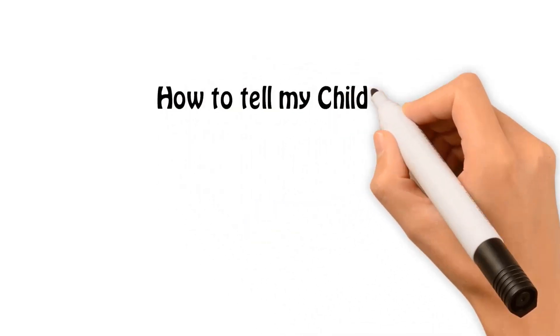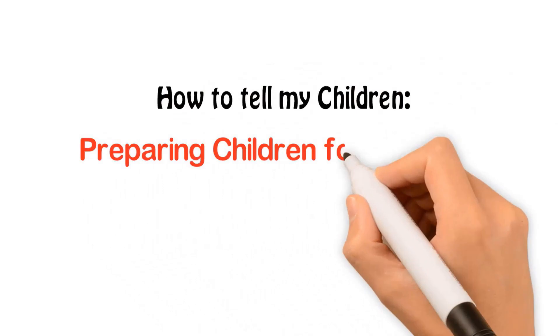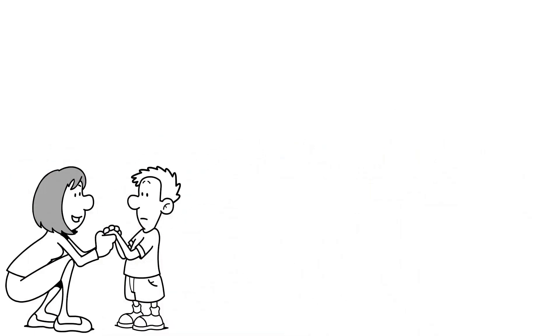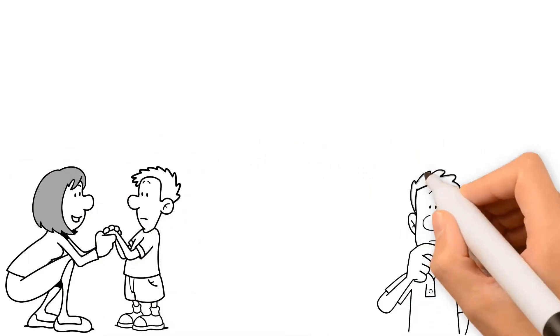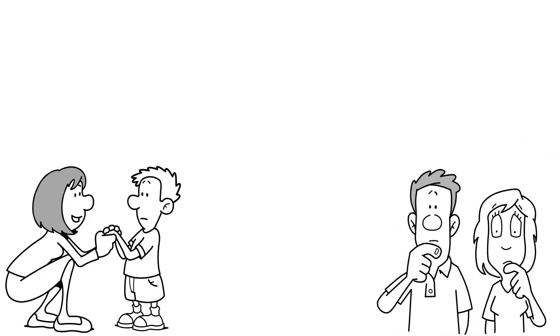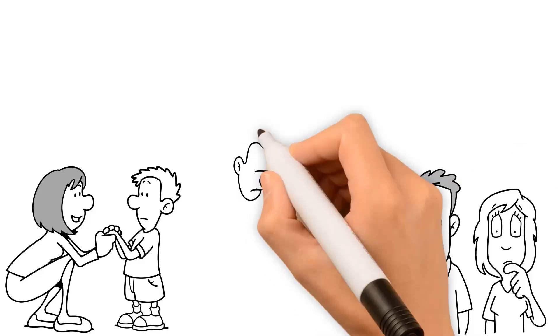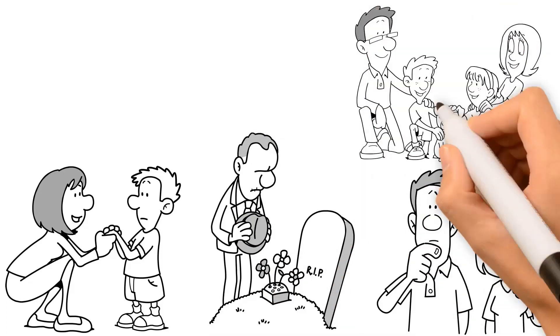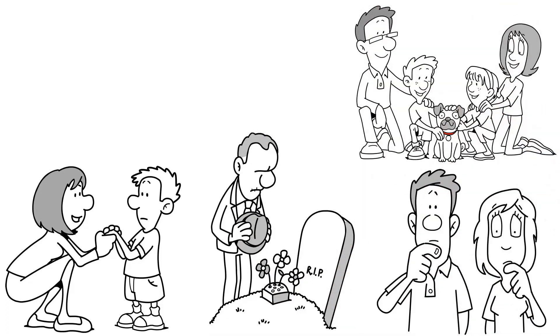How to tell my children: preparing children for the death of someone close to them. Certain topics can be really difficult to talk about with your children, especially death. Please stay tuned to look at the benefits of being honest and the drawbacks of withholding information such as death from your children.